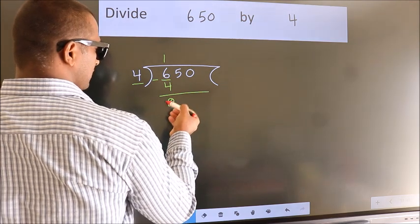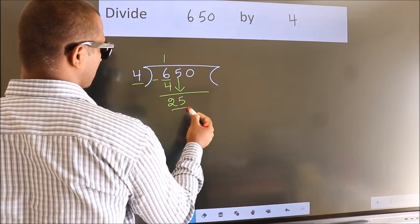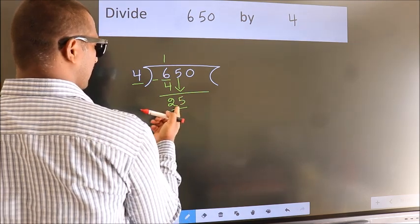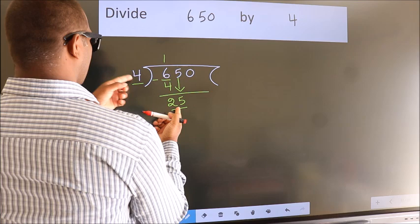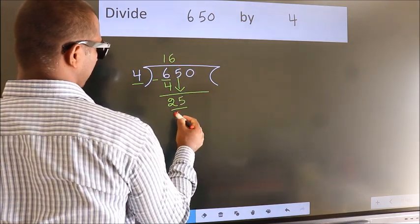After this, bring down the beside number. So, 5 down. So, 25. A number close to 25 in the 4 table is 4, 6, 24.